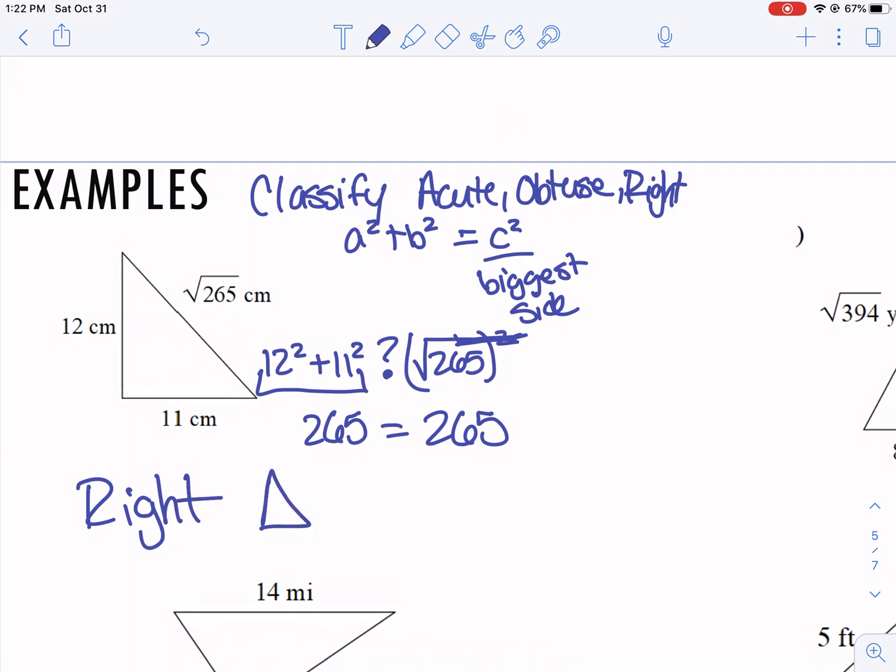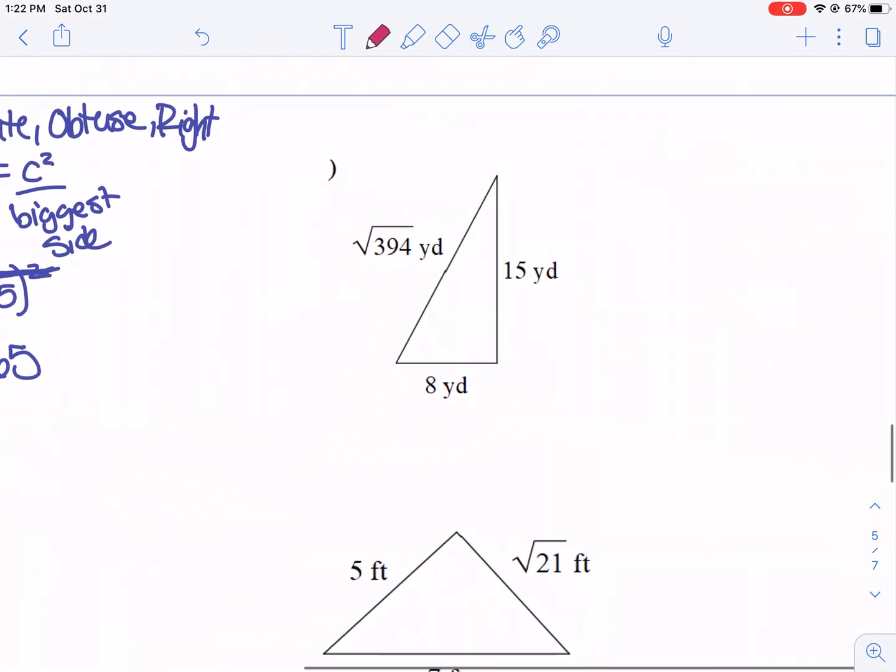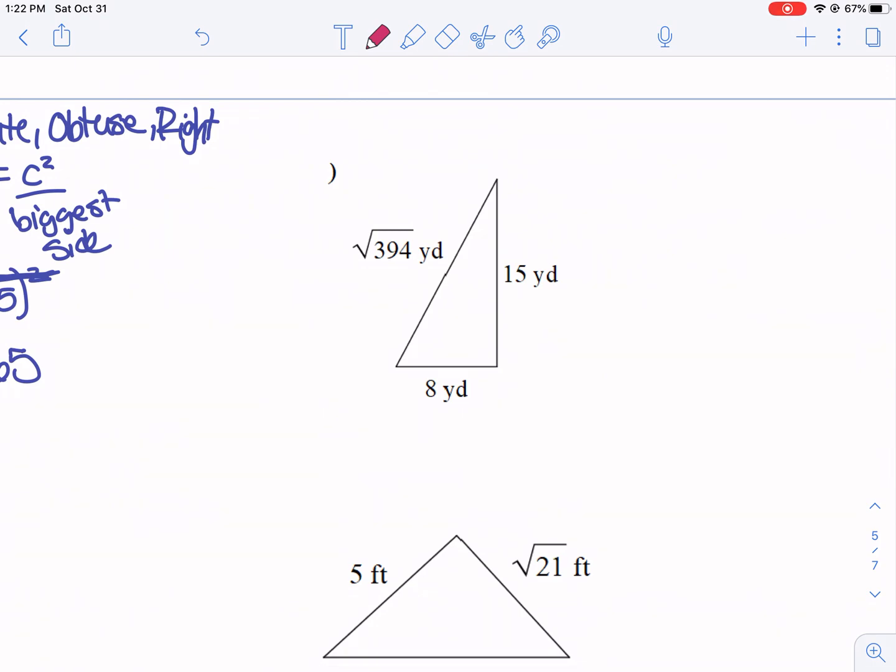Technically, a right scalene triangle since all three sides are different. But right now, we're just focusing on the angles. So that was this first example. The second one here, we're going to do 8 squared plus 15 squared and check to see how is it related to the square root of 394 squared.